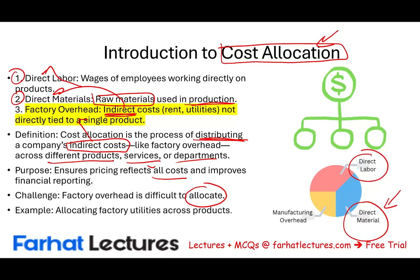We have to find an allocation method. For example, we need to allocate utilities across many products, and we don't know which product is consuming more or less. We have to find a method — maybe the space that a product occupies within the manufacturing facility, or the amount of labor hours. Some sort of a method. And this is what we will discuss in this session.